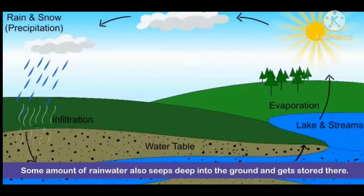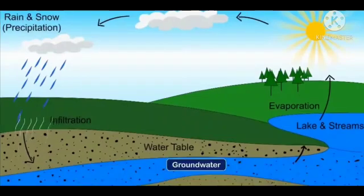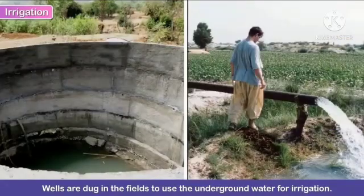Some amount of water also seeps into the ground and gets stored there — you can see this in the water cycle diagram. The water stored under the ground can also be used; wells are dug in the fields to use the underground water for irrigation.